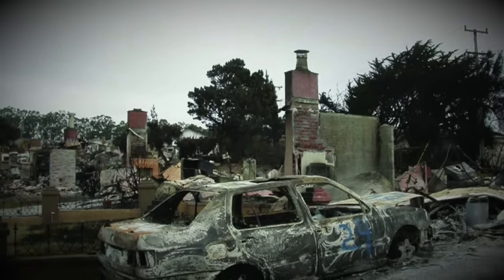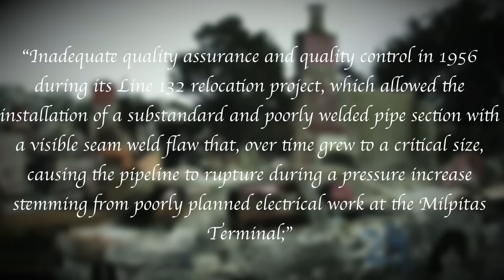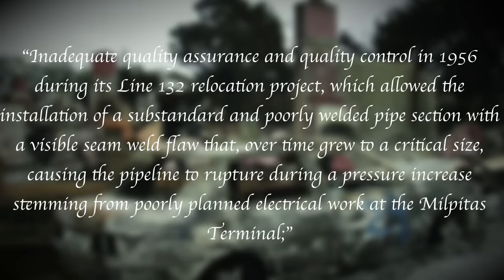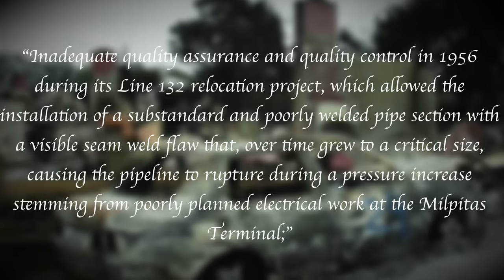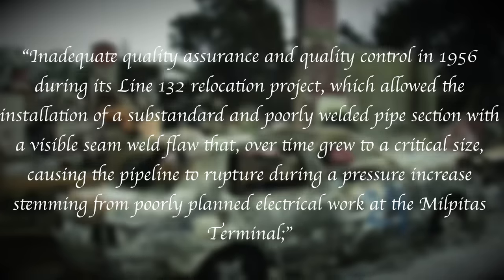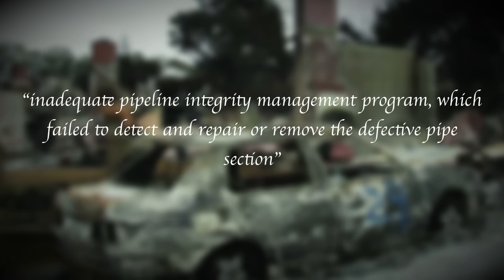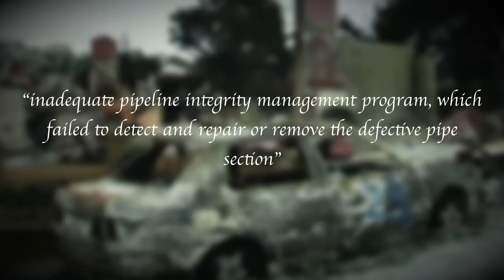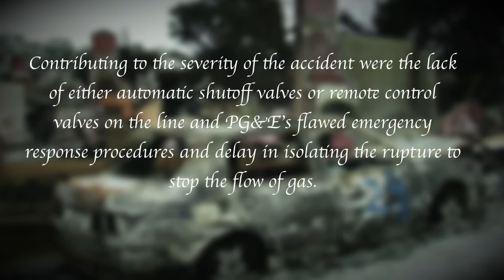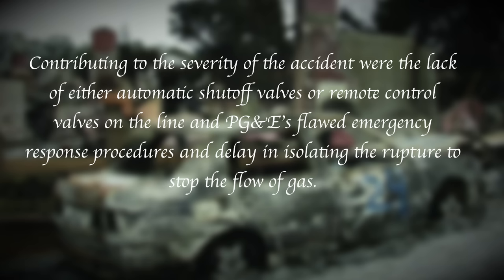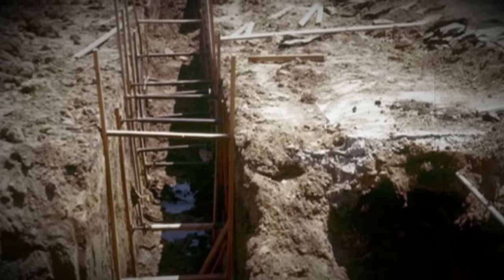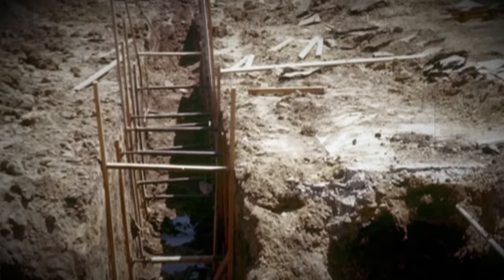The NTSB released its report and put the probable cause as one: inadequate quality assurance and control in 1956 during its Line 132 relocation project, which allowed the installation of a substandard and poorly welded pipe section with a visible seam weld flaw that over time grew to a critical size, causing the pipeline to rupture during a pressure increase stemming from poorly planned electrical work at the Milpitas terminal. And number two: inadequate pipeline integrity management program, which failed to detect and repair or remove the defective pipe section. They also added in their conclusion, contributing to the severity of the accident were the lack of either automatic shutoff valves or remote control valves on the line, and PG&E's flawed emergency response procedures and delay in isolating the rupture to stop the flow of gas. So this disaster shows just how close we all are to a potential time bomb, and especially in this case, it was set almost half a century before.